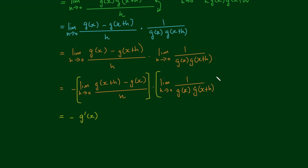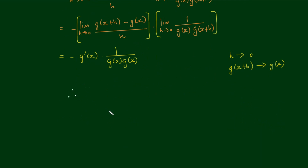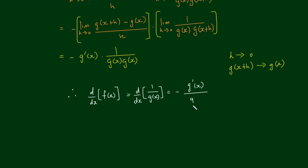For the second limit: because g of x is not equal to 0 and because it is differentiable at the value of x, it follows that as h approaches 0, g of x plus h approaches g of x. So the second limit evaluates to 1 on g of x times g of x, which is 1 over g squared of x. Therefore, we have derived and proved the reciprocal rule: the derivative of f of x, equal to 1 over g of x, is negative g prime of x on g squared of x.